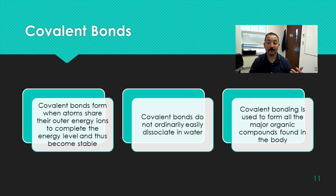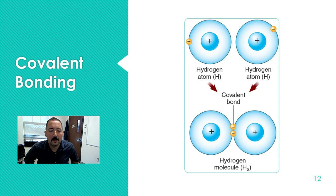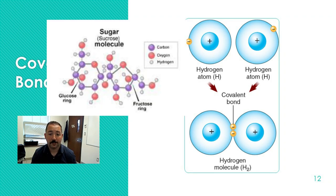The next bond is a covalent bond, and this one's found in organic chemistry. Instead of a straight up give and take between two elements, in covalent bonds, the two elements decide to share an electron. So the electron will spend some time with one atom, some time with another. It makes them both more stable. An example would be in this sugar molecule made of carbon, hydrogen, and oxygen.